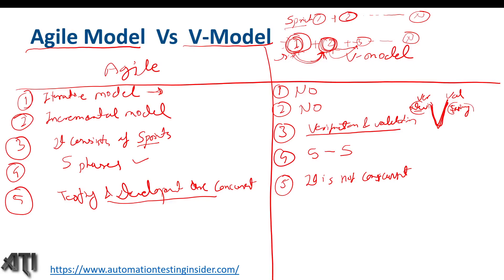In V model, we cannot start testing until the product is finished. We do prepare the acceptance test plan and planning starts for each testing level alongside development, but actual testing only begins once the software is developed and coding is done. The software is then released to the testing team, and we execute all test cases level by level: unit level, then integration, then functional, then system, and then UAT. This is how it works in V model.